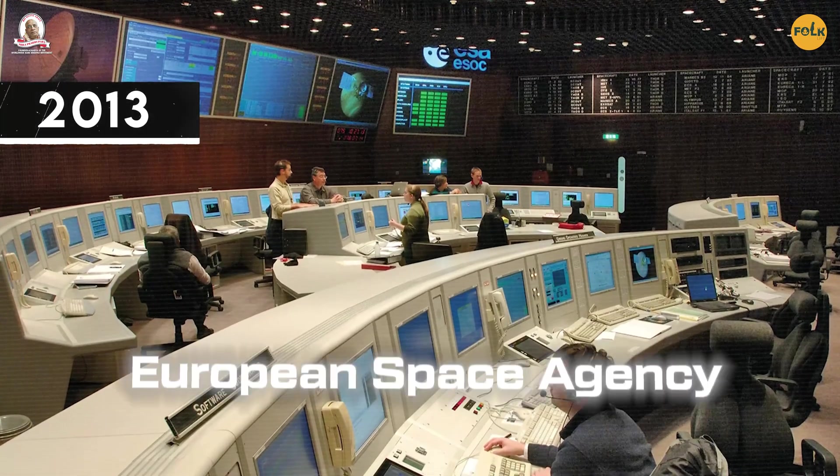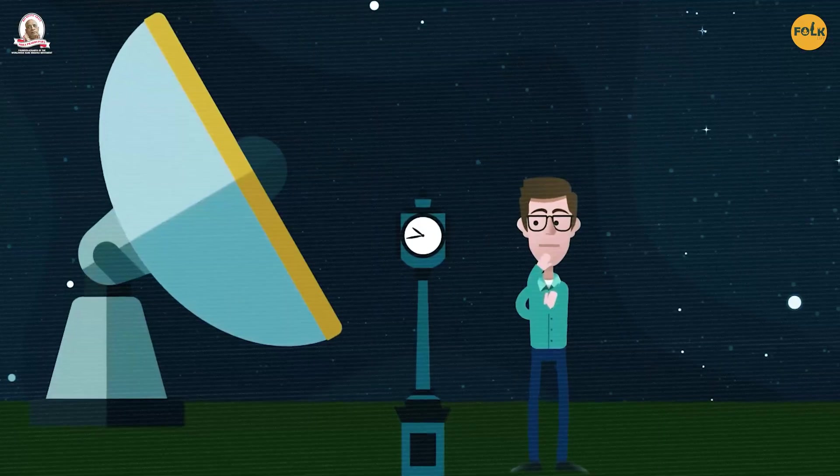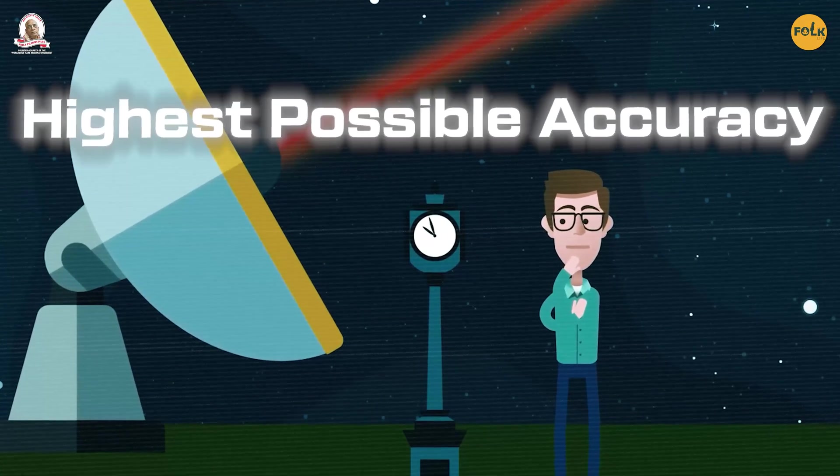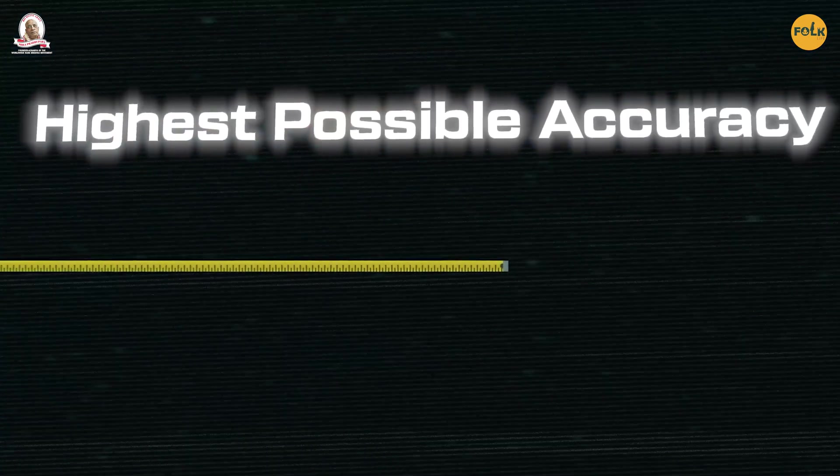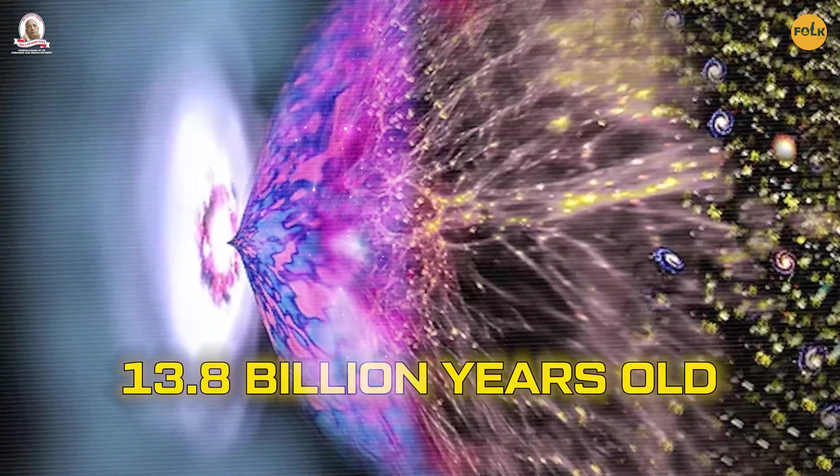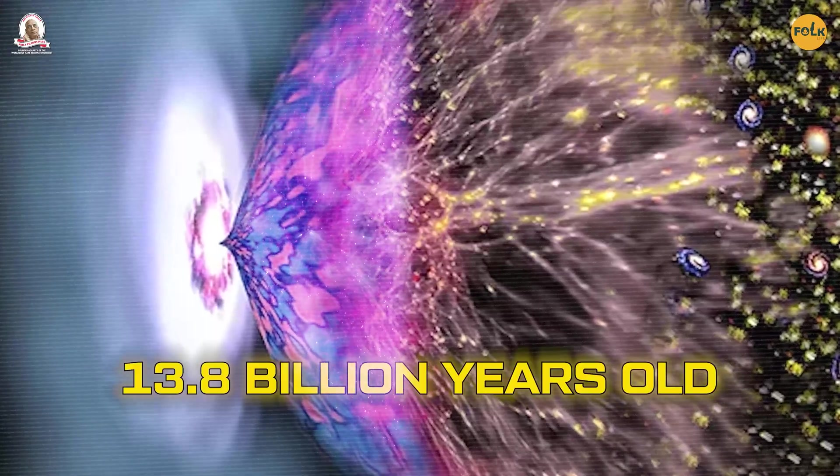In 2013, the European Space Agency, by measuring the fluctuation of microwave background radiation with the highest possible accuracy, detected the oldest radiation of the universe, which is 13.8 billion years old.